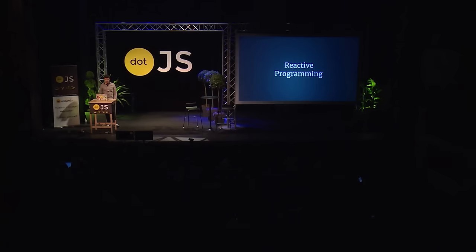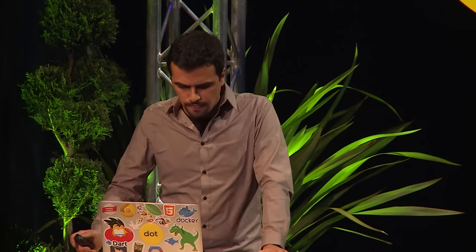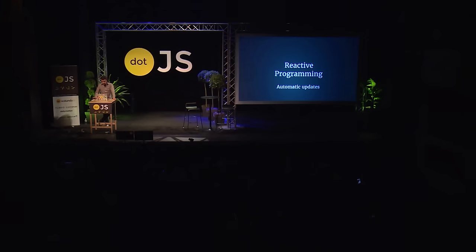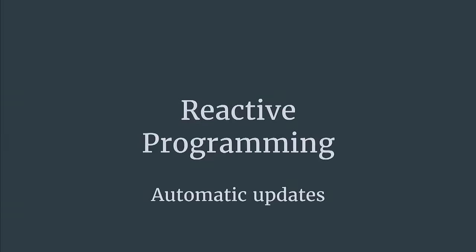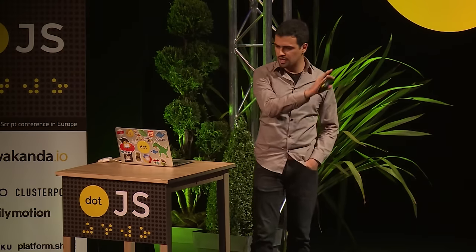And that was reactive programming. If you've ever heard of reactive programming before, now you have some idea of what this is about. It gives you automatic updates between data dependencies. But there's something really nice about reactive programming that I want to share, which is really exciting: separation of concerns. Besides all of those nice things, it also gives you separation of concerns.